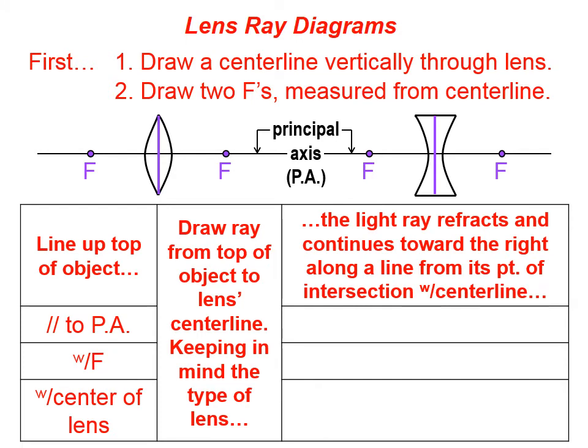When we draw lens ray diagrams, there are three possible rays that we can draw. We want to start our ray from the top of the object and head towards the center line of the lens — that is, this vertical center line. If our first ray goes in parallel to the principal axis, the ray that emerges on the right side of the lens will be in line with the focal point. If the first ray is heading towards the focal point, when it emerges from the lens, it will emerge parallel to the principal axis.